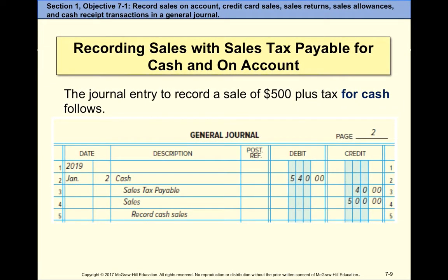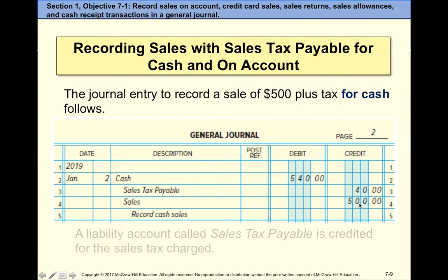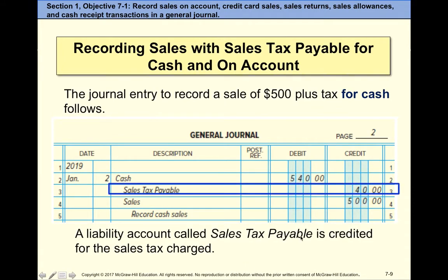Now this is something new. Since we are operating in a state that charges sales tax, here we have a journal entry to record a sale of $500 plus tax for cash. The actual sale is $500; sales tax on that amount is $40 — the percentage will be given to you. Together, $540 is the cash we receive from the customer: one debit, two credits. Sales tax payable goes up on the credit. When you pay the state, you debit sales tax payable and credit cash.